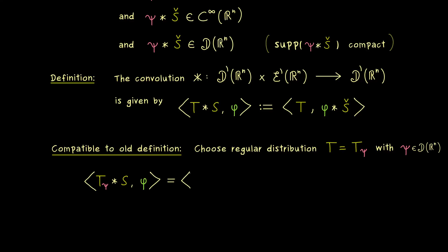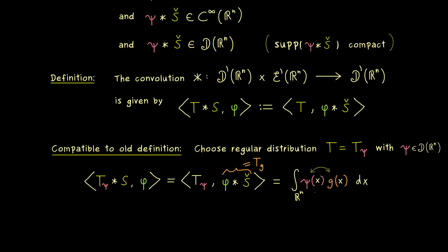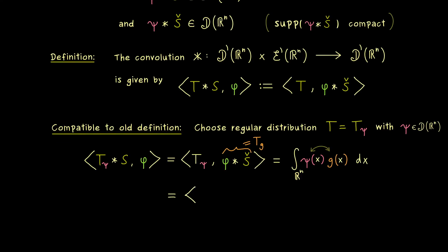We have the dual pairing of t_psi with the rest. Since we have a regular distribution, this dual pairing can be seen as an integral: we have psi times the function that represents the other regular distribution, which we call g. In the integral we also have g, and we can exchange the order and the product. We can then write it as a dual pairing again, but now with the convolution on the left and the test function psi on the right. There we can use our old definition of the convolution — push the star to the right — giving s.check, phi.check, star psi.